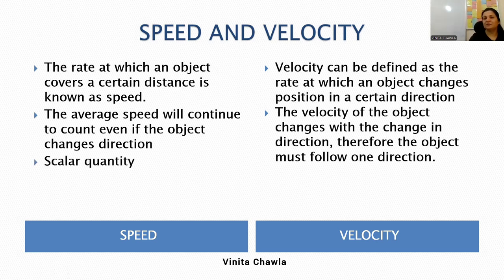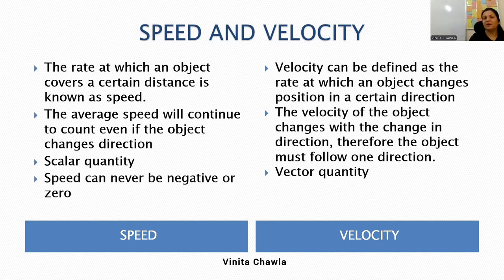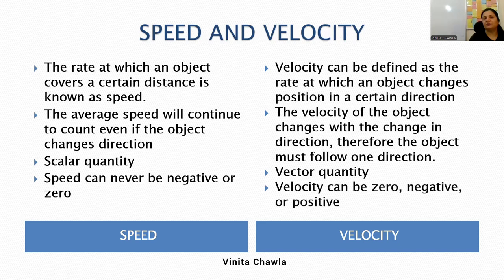Speed is a scalar quantity; velocity on the other hand is a vector quantity. Speed can never be negative or zero, whereas velocity can be zero, negative, or positive.